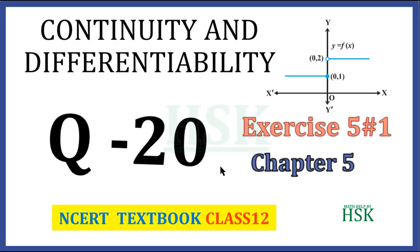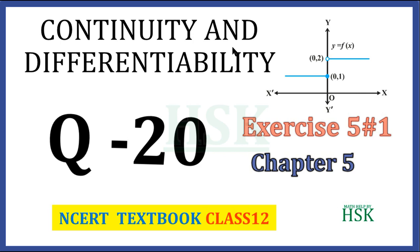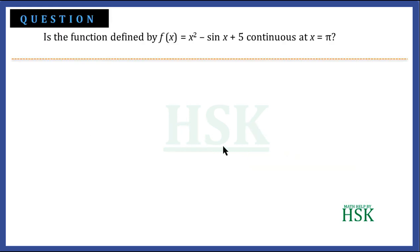This is question number 20 of exercise 5.1 from the chapter Continuity and Differentiability. The question is: is the function defined by f(x) = x² − sin x + 5 continuous at x = π?